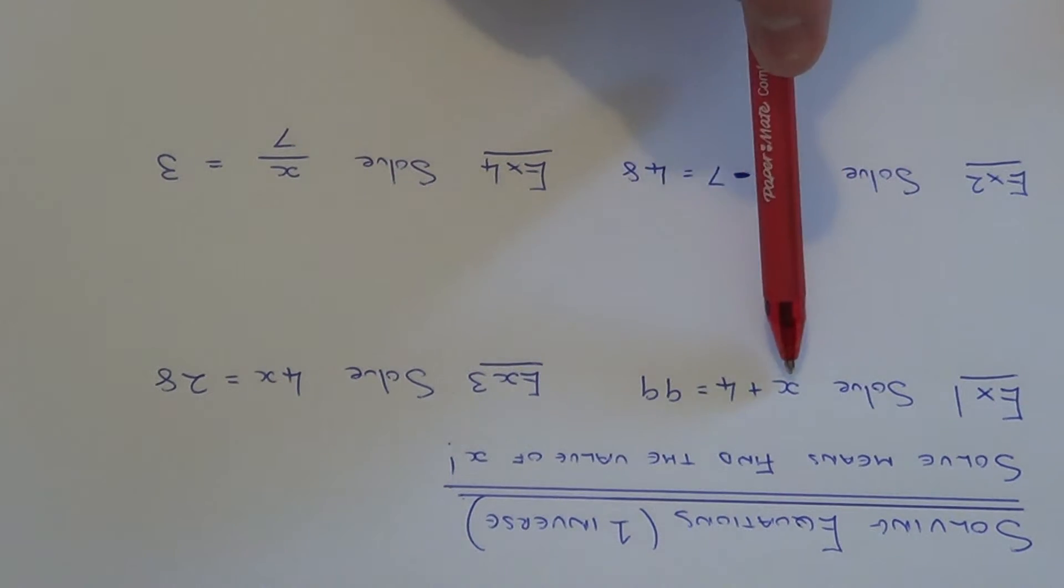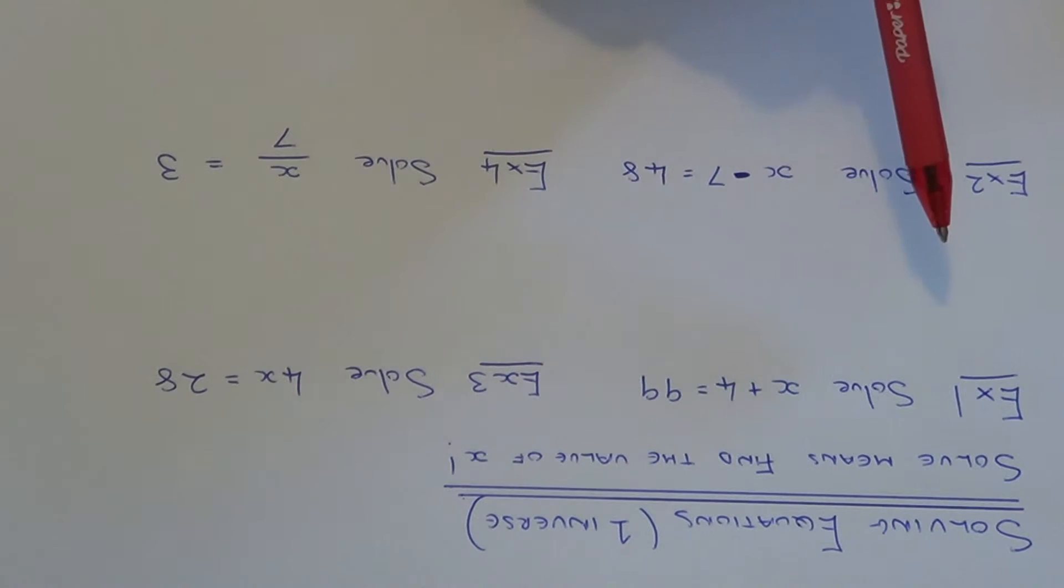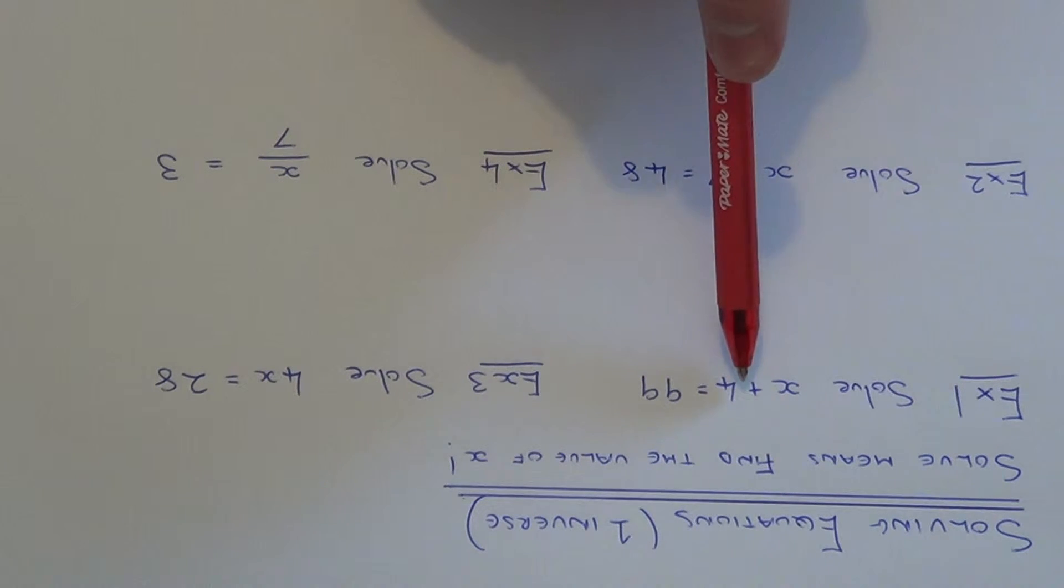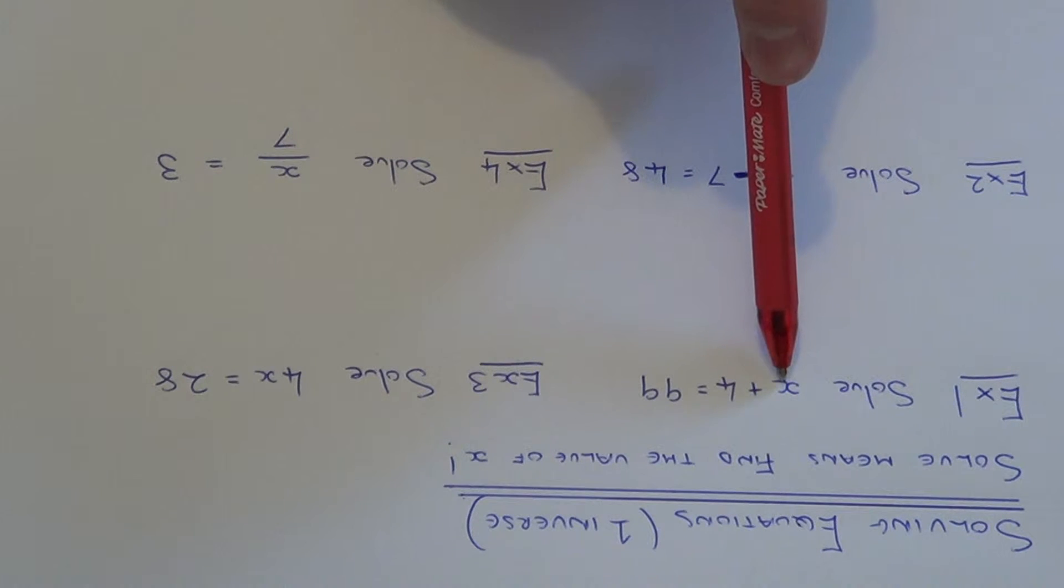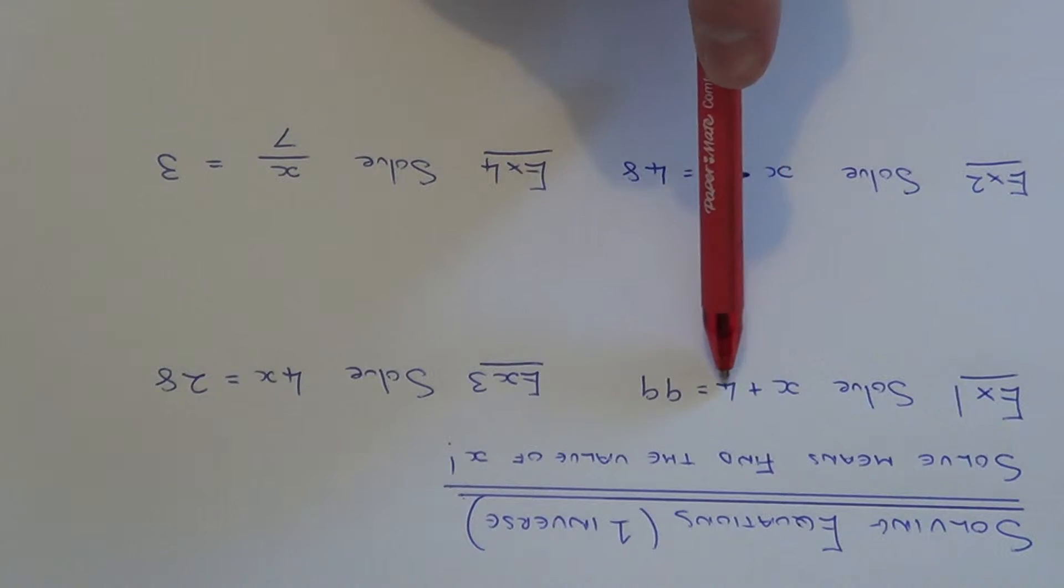So to solve this equation here, x plus 4 equals 99, all you need to look at is the left hand side and notice what is happening on the left hand side - we are adding on 4 to x.